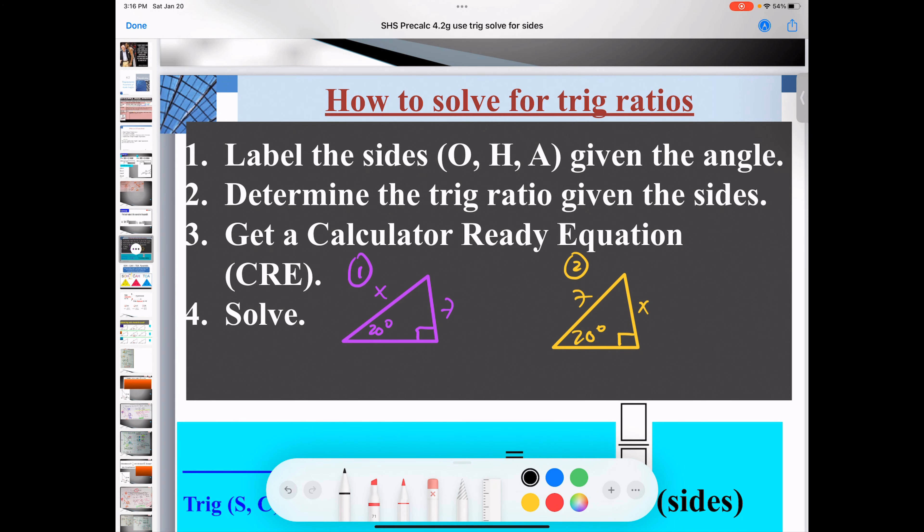Hey guys, let's go over how to solve for trig ratios. Number one, label the sides with O, H, and A: opposite, hypotenuse, and adjacent given the angle. I'm going to highlight that because the angle is your starting point. Number one, you will always start with the angle.